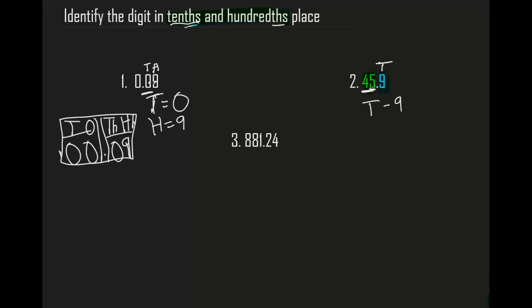Now we can't just leave the hundredths place — we still need to put a number there. So let's say we have 45.9, which is the same number. What would be the number in hundredths place? It would be a zero, because there's no digit after nine. So in the hundredths place it would be a zero.